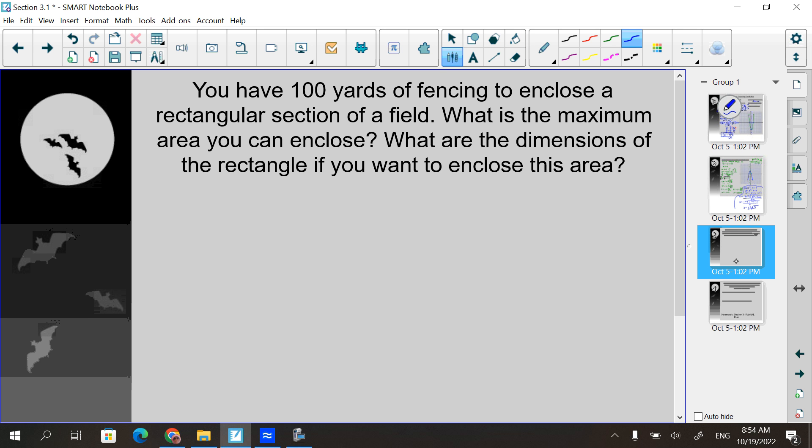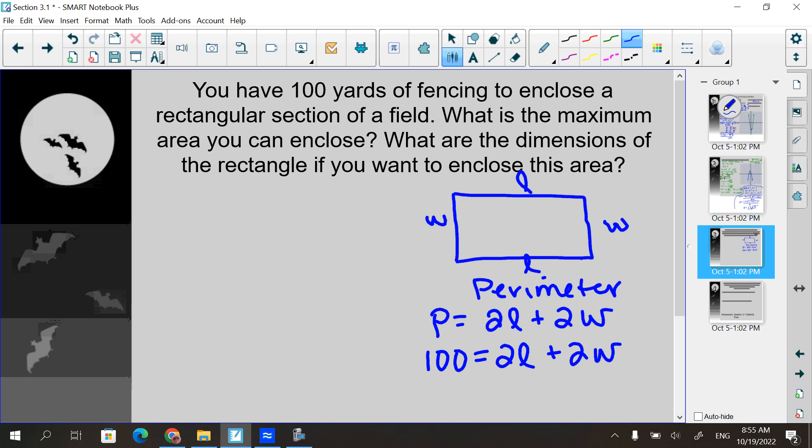It says you have 100 yards of fencing to enclose a rectangular section of a field. So I have a rectangular section. I'm going to put fencing around the outside of it. If I'm putting fencing around the outside of it, what geometric formula would I need for that? What's that called? The perimeter, right? The perimeter, I have the length, I have the width, I have the length, I have the width. The perimeter is when you add them all up, right?